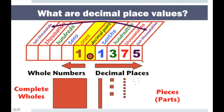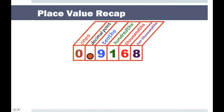The decimal place values can get smaller and smaller as we keep going to the right. However, I highly doubt you're going to see anything much smaller than ten-thousandths. So let's have a small place value recap — let's see if we remember exactly how to say each of the place values.